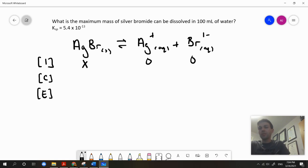Here we have a one to one to one ratio, so for every one mole of solute which dissolves in one liter of water, we produce one mole of silver ions and we produce one mole of bromide ions. At equilibrium, their concentrations will be x and x.